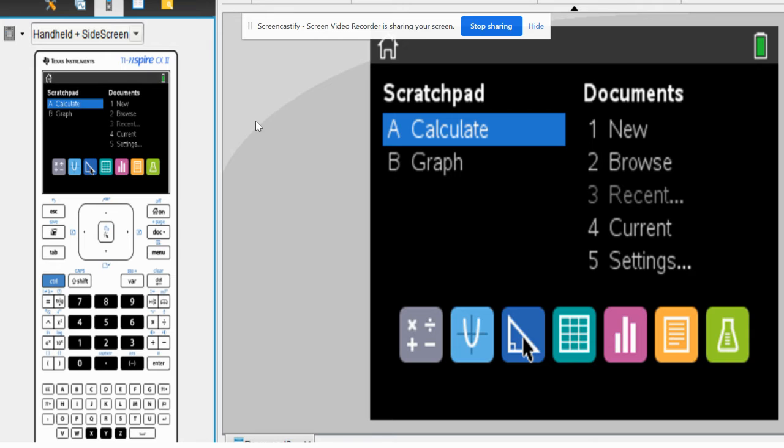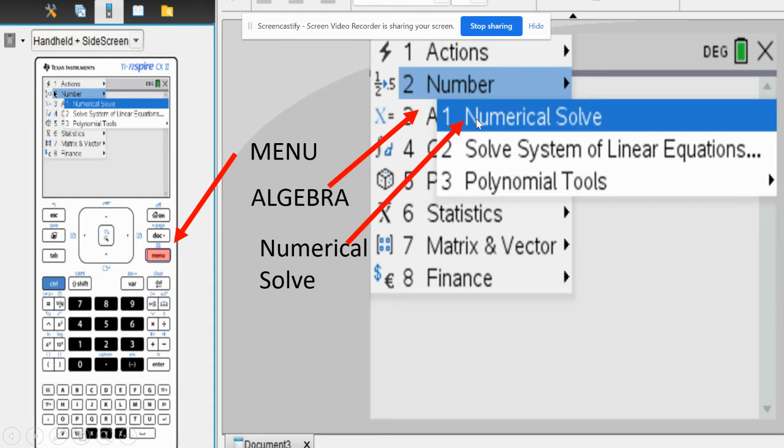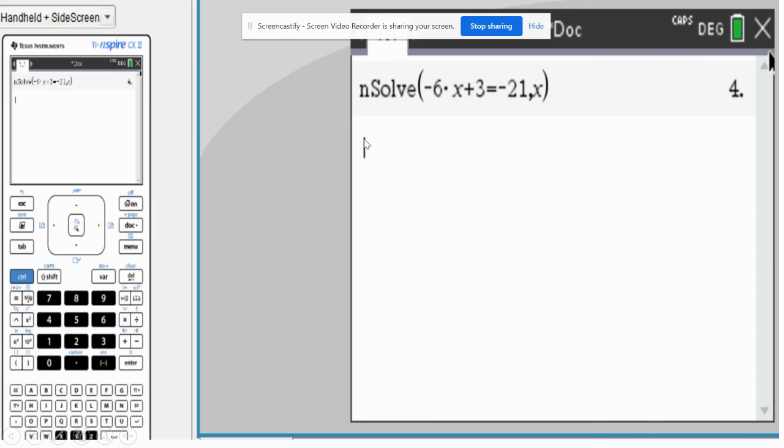And you're going to type in the equation. Now, once again, here's a picture. You hit your calculate screen. You have to hit the menu button, which is highlighted right here in the red. And then you hit option 3, algebra. And then you hit this option 1, numerical solve.